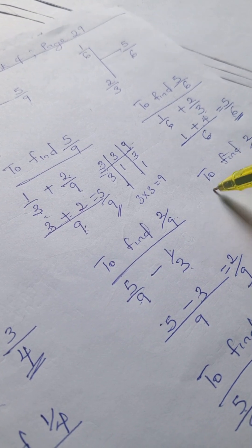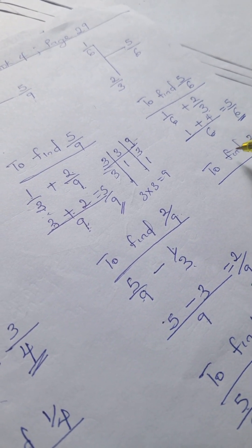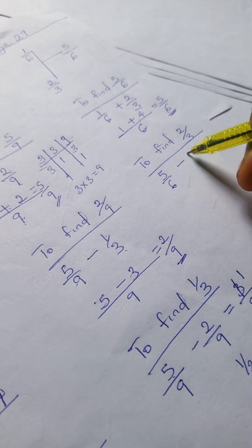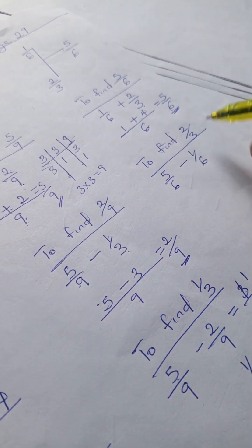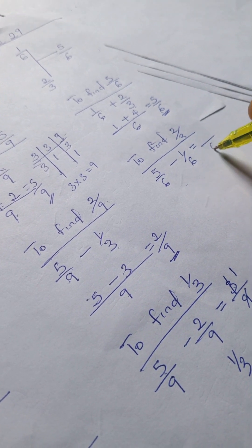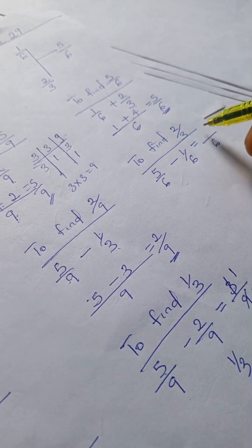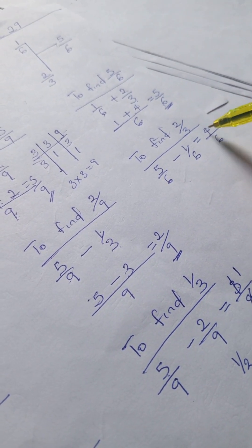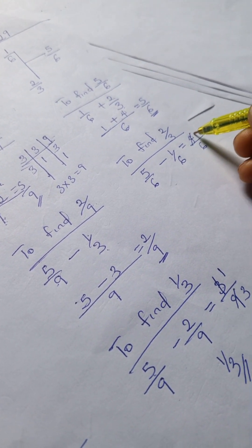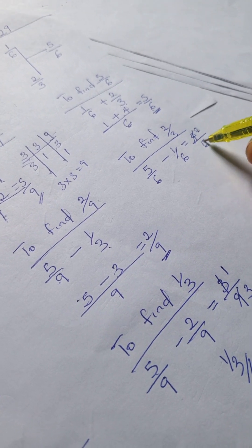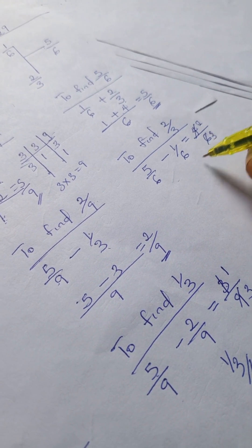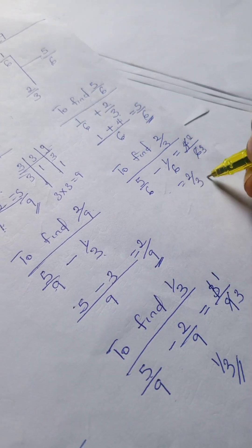To find 2/3, we have 5/6 minus 1/6. Since the denominators are the same, we pick one: 5 minus 1 is 4, over 6. We can reduce this — both 4 and 6 are multiples of 2. So 4 divided by 2 is 2, and 6 divided by 2 is 3. That gives us 2/3.